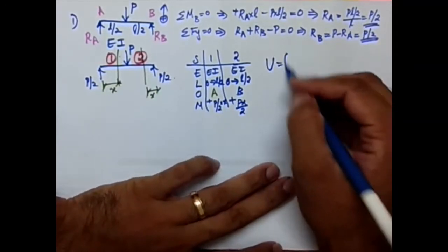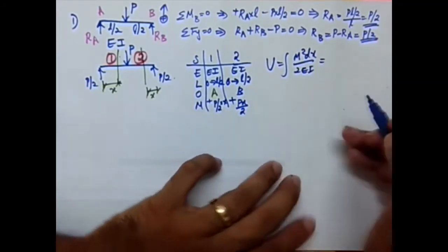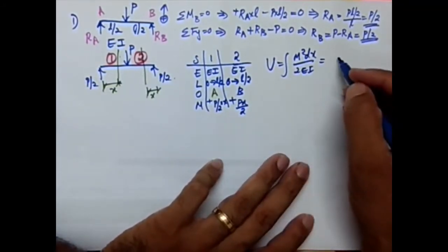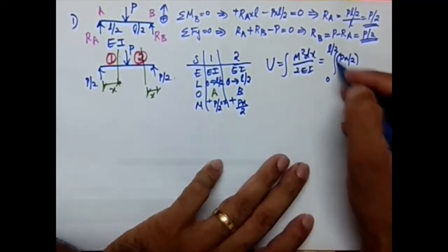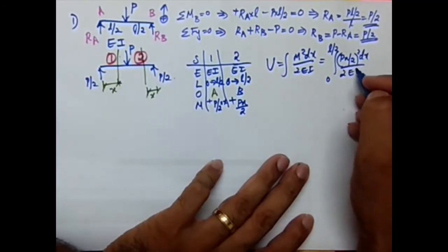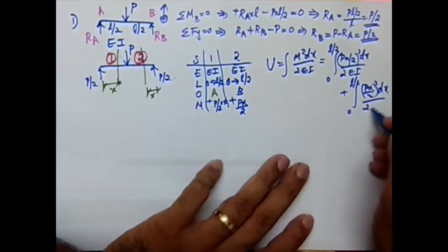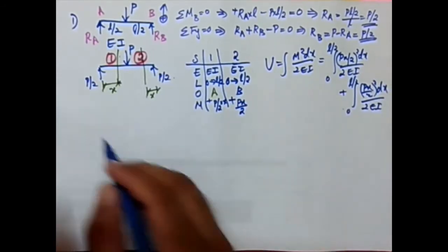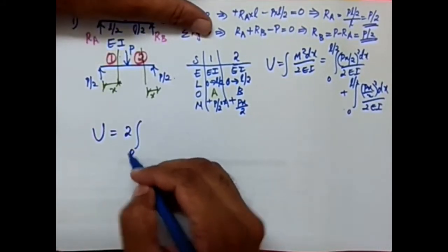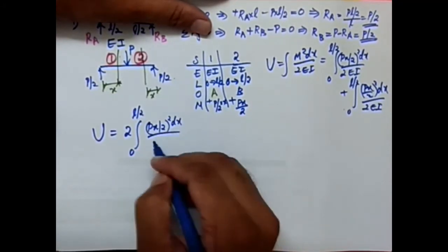Now we calculate U = integral of M² dx / 2EI. There are two segments, so this splits into two integrals: Segment 1 gives integral from 0 to L/2 of (PX/2)² dx / 2EI, plus Segment 2 gives integral from 0 to L/2 of (PX/2)² dx / 2EI. Since both integrals are identical, U = 2 times the integral from 0 to L/2 of (PX/2)² dx / 2EI.